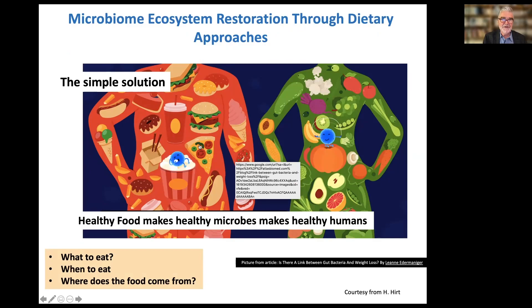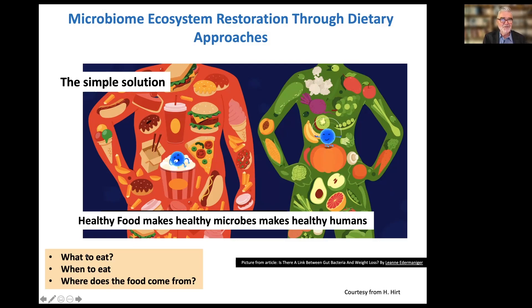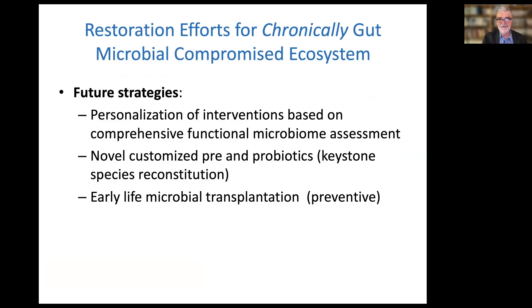Going from the standard American diet — associated with obesity and all the chronic health problems — to one mainly composed of fruits and vegetables is definitely one way to counteract this current development. It's important to realize it's not just important what we eat, but when we eat, and also to know where the food comes from and what impact this has on the environment.